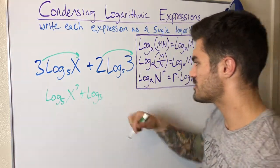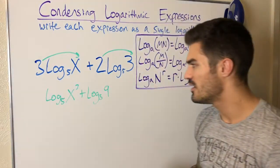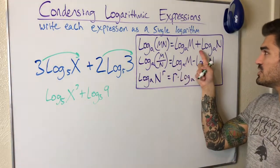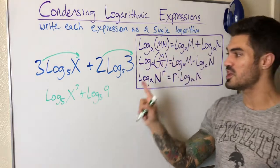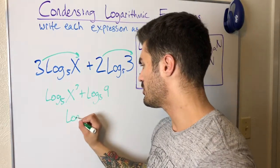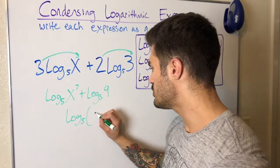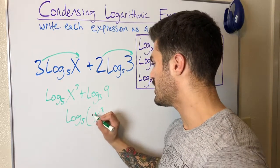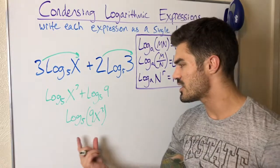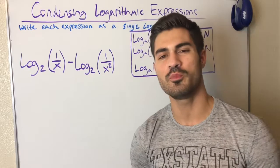3 cubed is simply 9, so I'll rewrite 9 right here. Now I can combine these — I have addition, so I'm going from addition to multiplication in one single logarithm: log base 5 of x cubed times 9. I'll put the 9 out in front, so I have 9x cubed. That's how I prefer to write it.